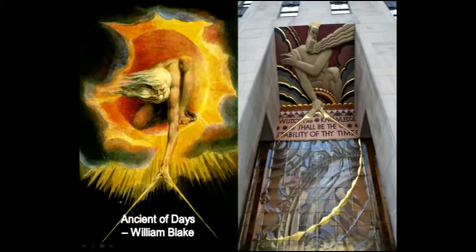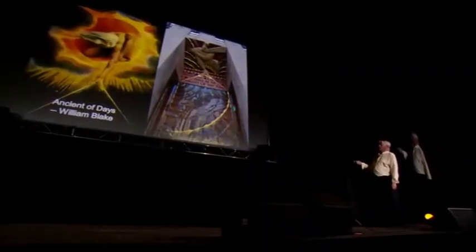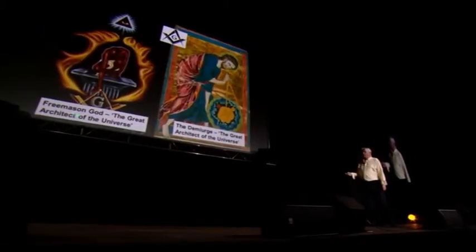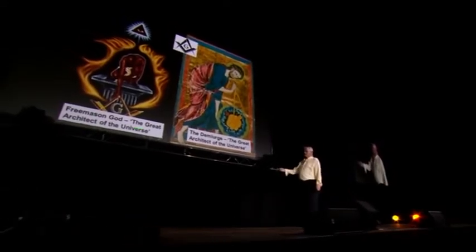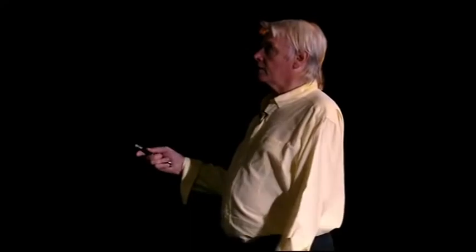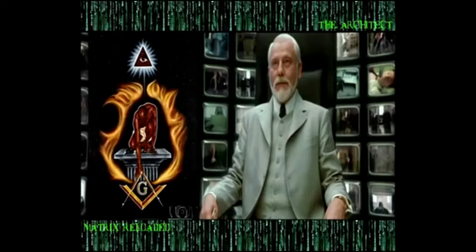That is Saturn symbolism — a man with a white beard. William Blake's painting 'Ancient of Days,' from around 1794, depicts God with a white beard — that's Saturn, Kronos. On the GE building in the Rockefeller Center in New York, there's Kronos again. The Freemasons call their God the great architect of the universe, and the Demiurge was known by the Gnostics by exactly that name — which brings us to the white-bearded architect of the Matrix in the Matrix movie series.